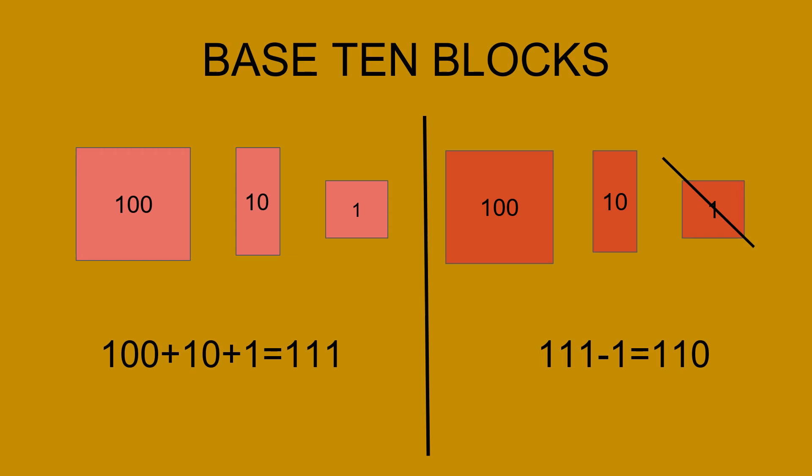This is the method for doing it with subtraction. First, I have to add up everything, so I know everything will give me 111 because I have 100, 10, and 1 block. Now I want to remove 1. The way I do it with the block, I will remove the 1, and as you can see, the final answer will give you 110.